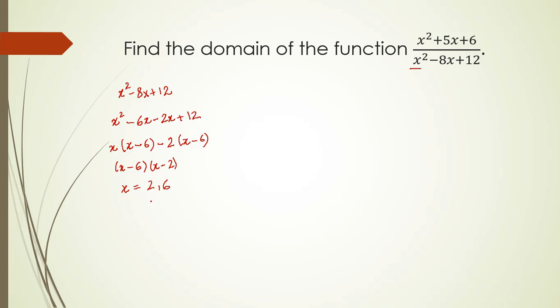Now for the given function f(x) equal to x squared plus 5x plus 6 divided by x squared minus 8x plus 12, this function can take all the inputs except 2 and 6, because if the inputs are 2 and 6 we will get the denominator to be 0 and which will make the function not defined.